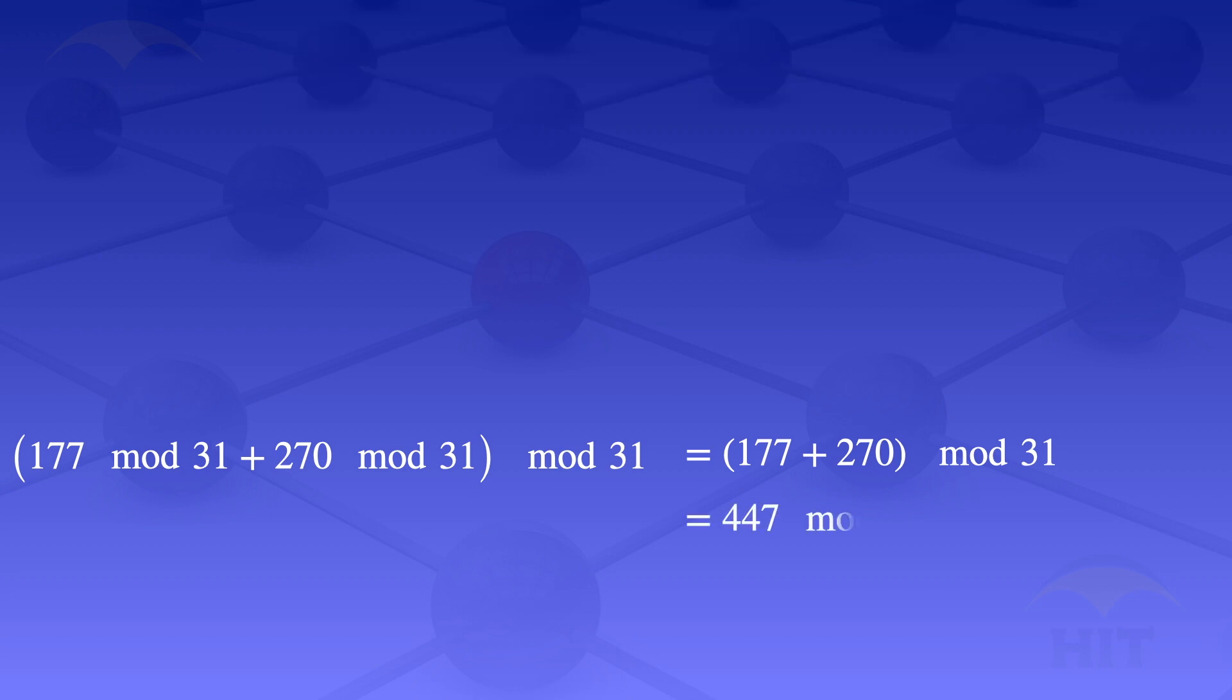This simplifies to 447 mod 31, which is the remainder when 447 is divided by 31.